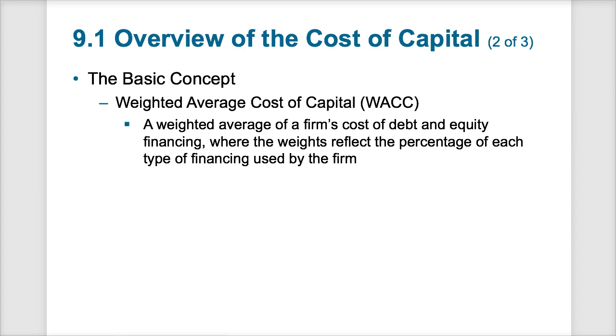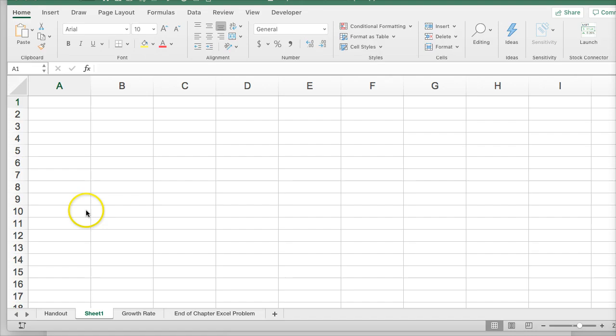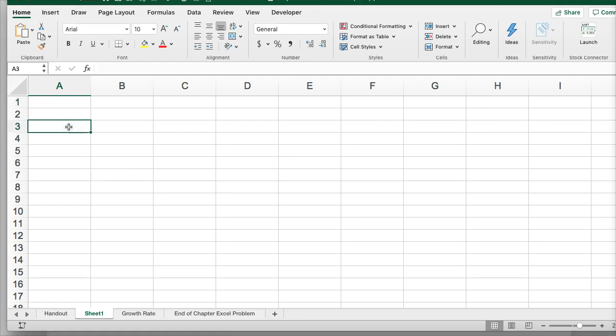Let's do an example of cost of capital by pulling up Excel. We'll use a personal example — figuring out the weighted average cost of capital for going to school. You may have money that you earned at a job that you have saved.